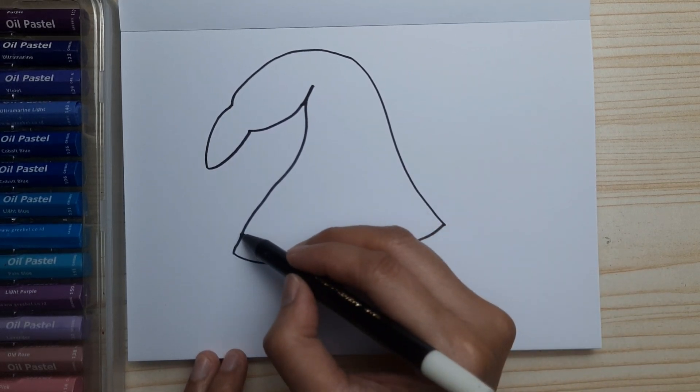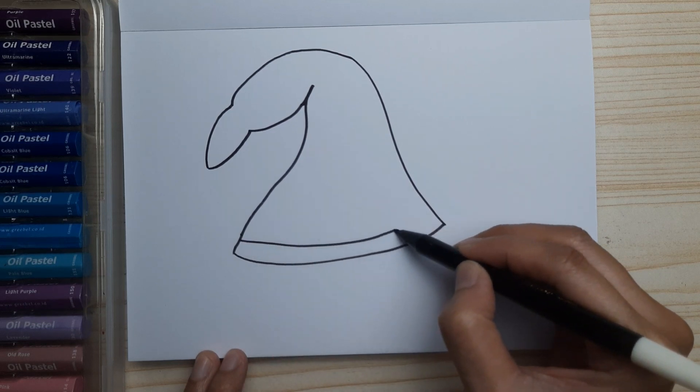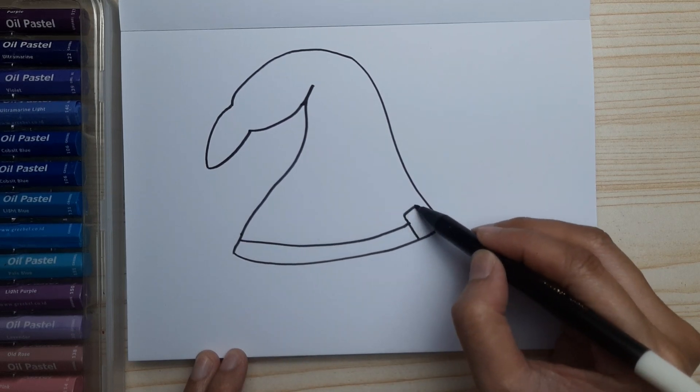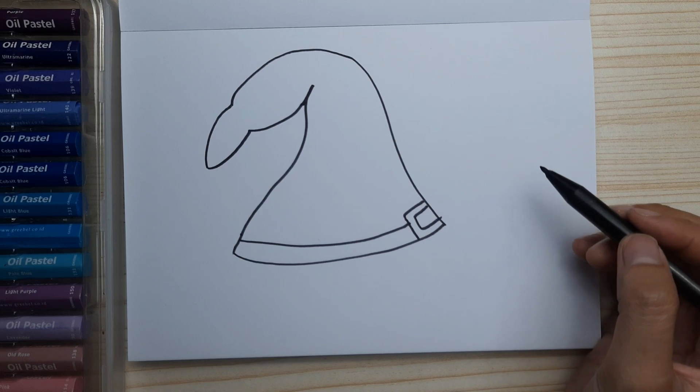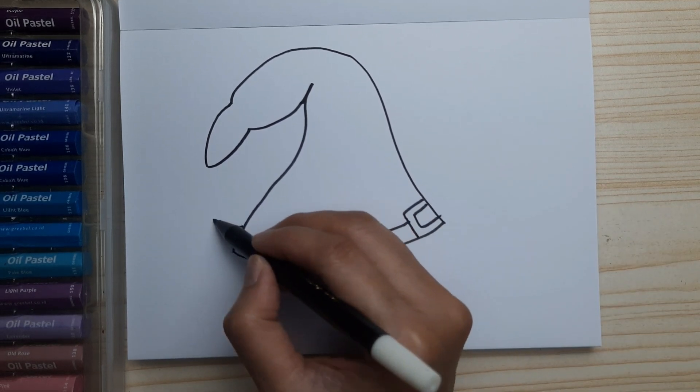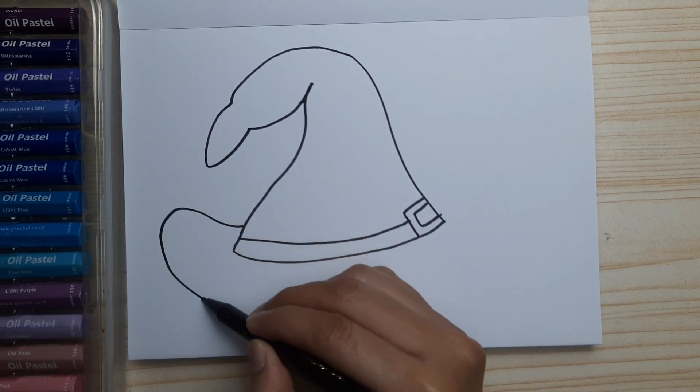...the headband and the buckle—witch hat has a buckle—and now let's draw the brim, just a little bit curling up.